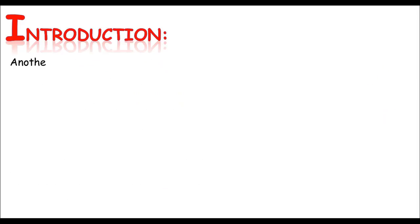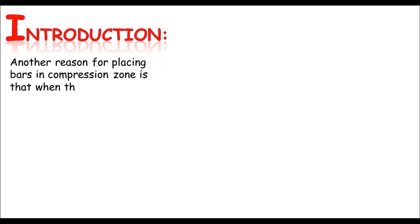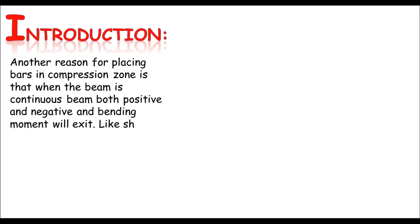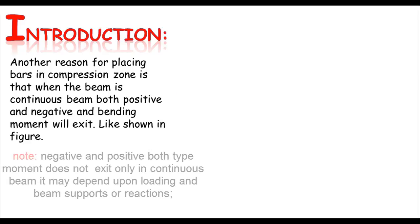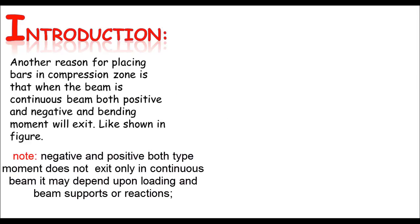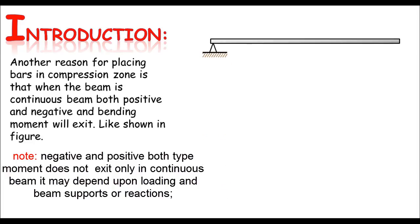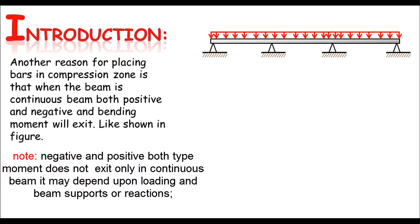Another reason for placing reinforcement in the compression zone is when the beam is continuous, so both positive and negative moments will exist, as shown in the figure. Let's say this is a continuous beam having some UDL. How should the moment diagram look like?